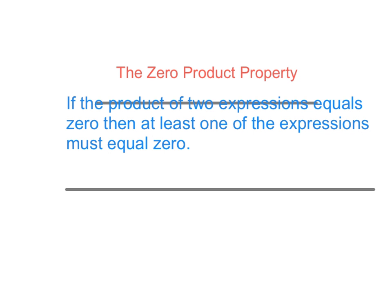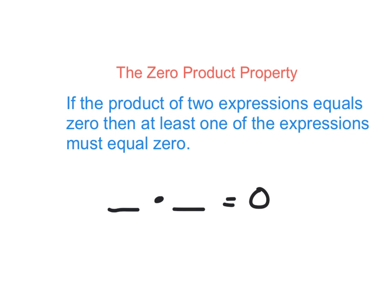The zero product property basically points out that if the product of two expressions equals zero, then at least one of the expressions must be zero. We can use a little common sense to talk about this. If I have two numbers and I multiply them together, and the answer is zero, you might say something like, oh, that could be zero times five, and that is true, that works.